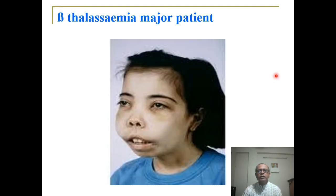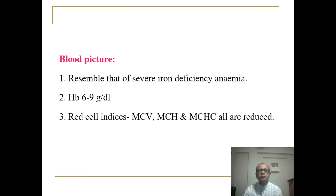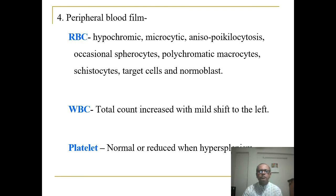The blood picture resembles that of severe iron deficiency. Hemoglobin is 6 to 9 g/dL, and red cell indices — MCV, MCH, and MCHC — are all reduced, similar to iron deficiency. This is one of the hypochromic microcytic anemias. The four causes of hypochromic microcytic anemia are: iron deficiency anemia, thalassemia, sideroblastic anemia, and anemia of chronic disease.